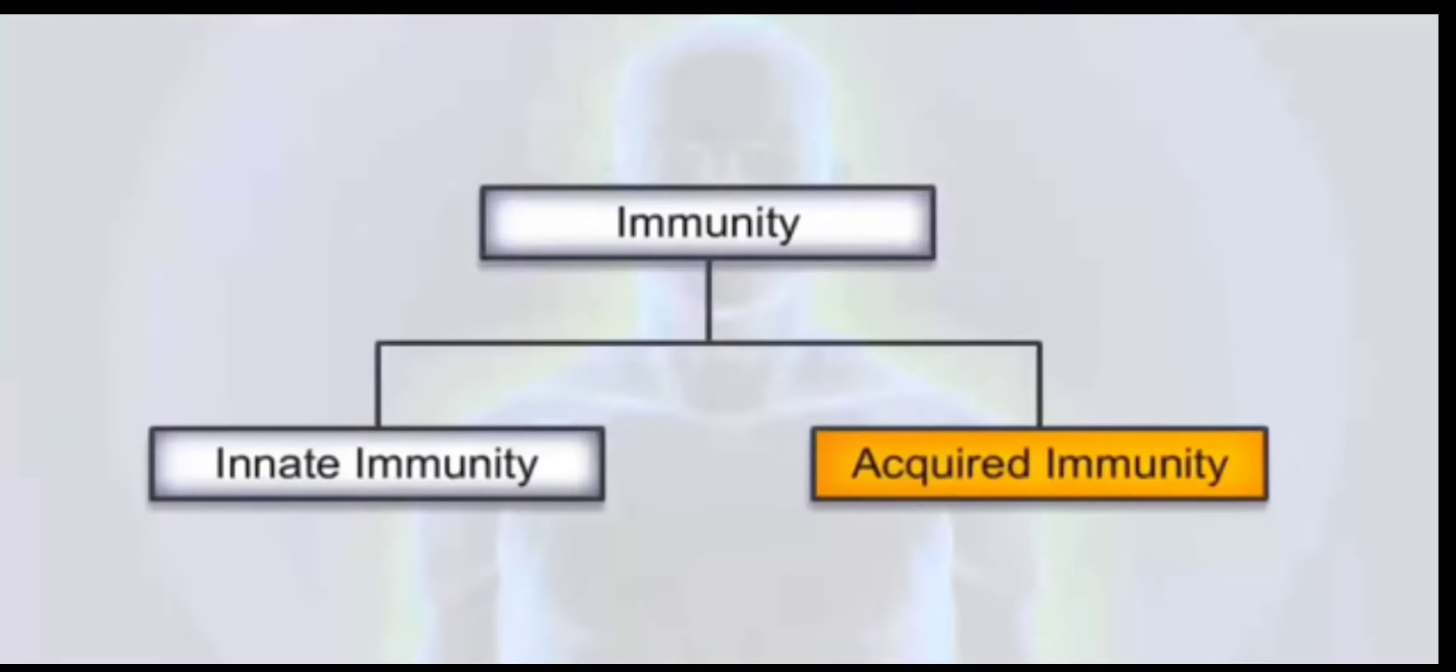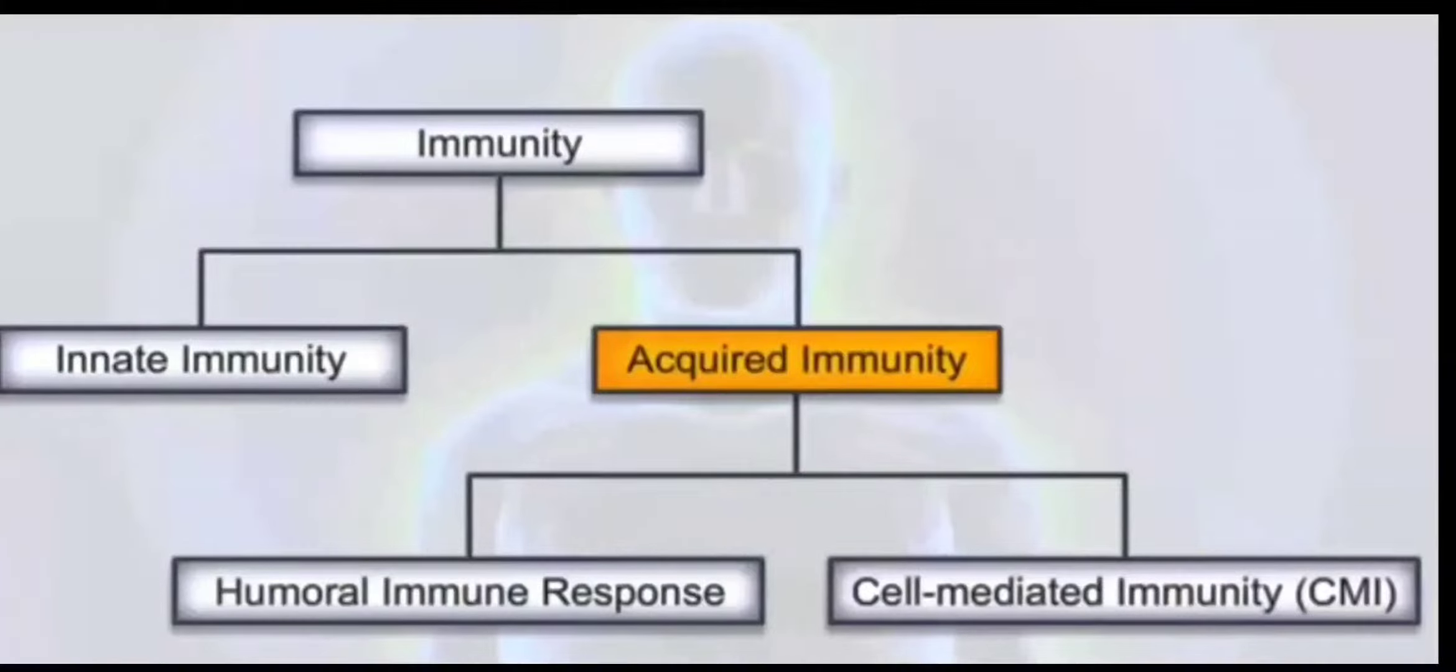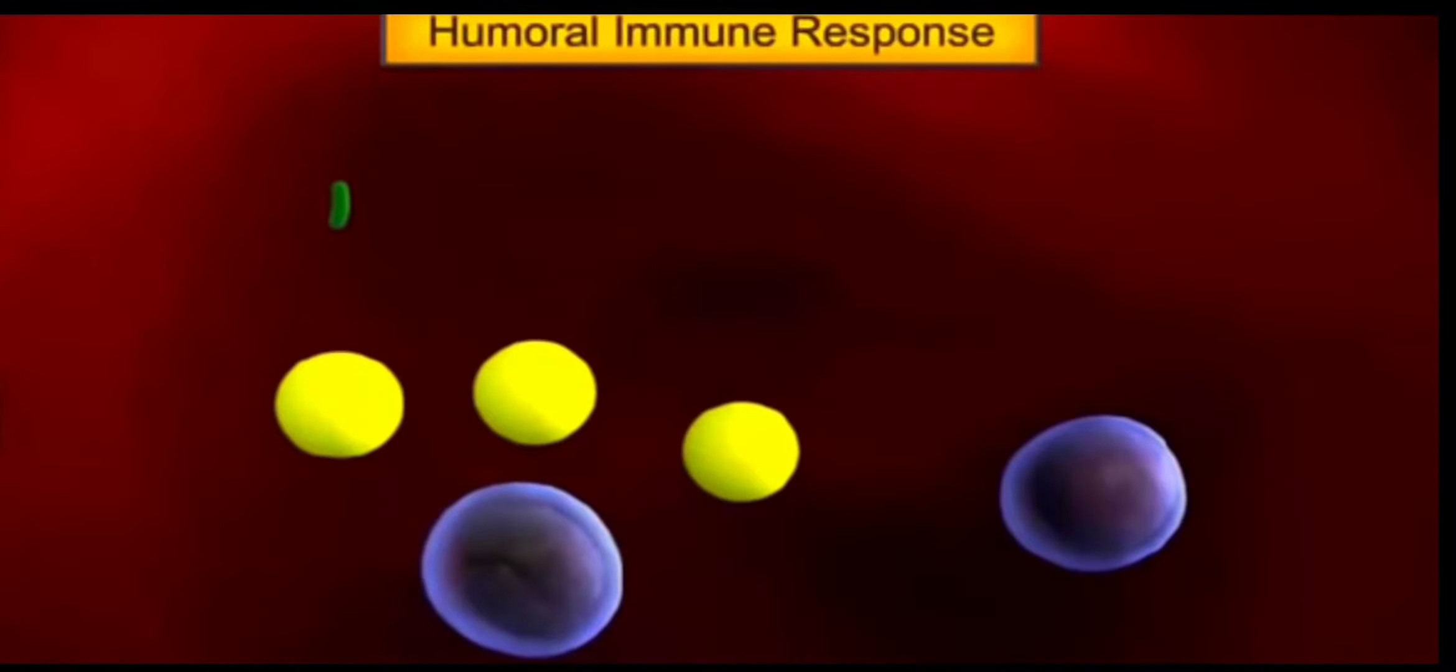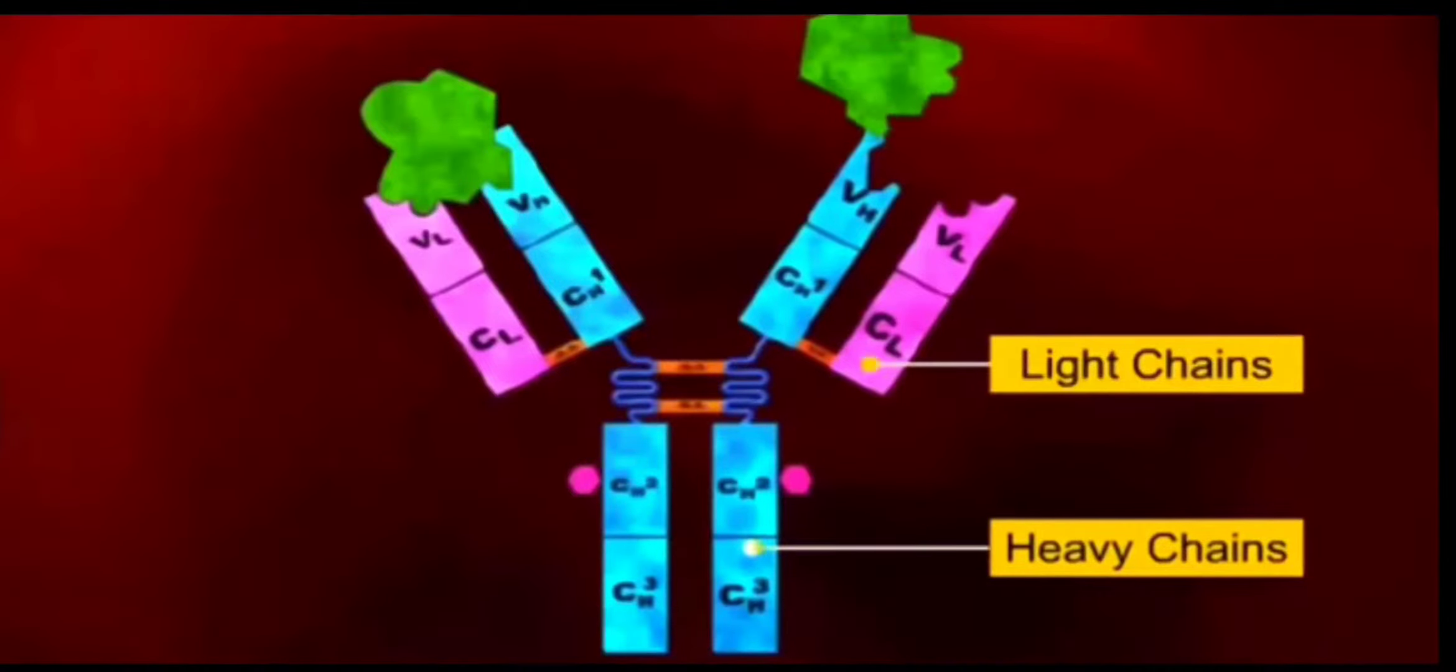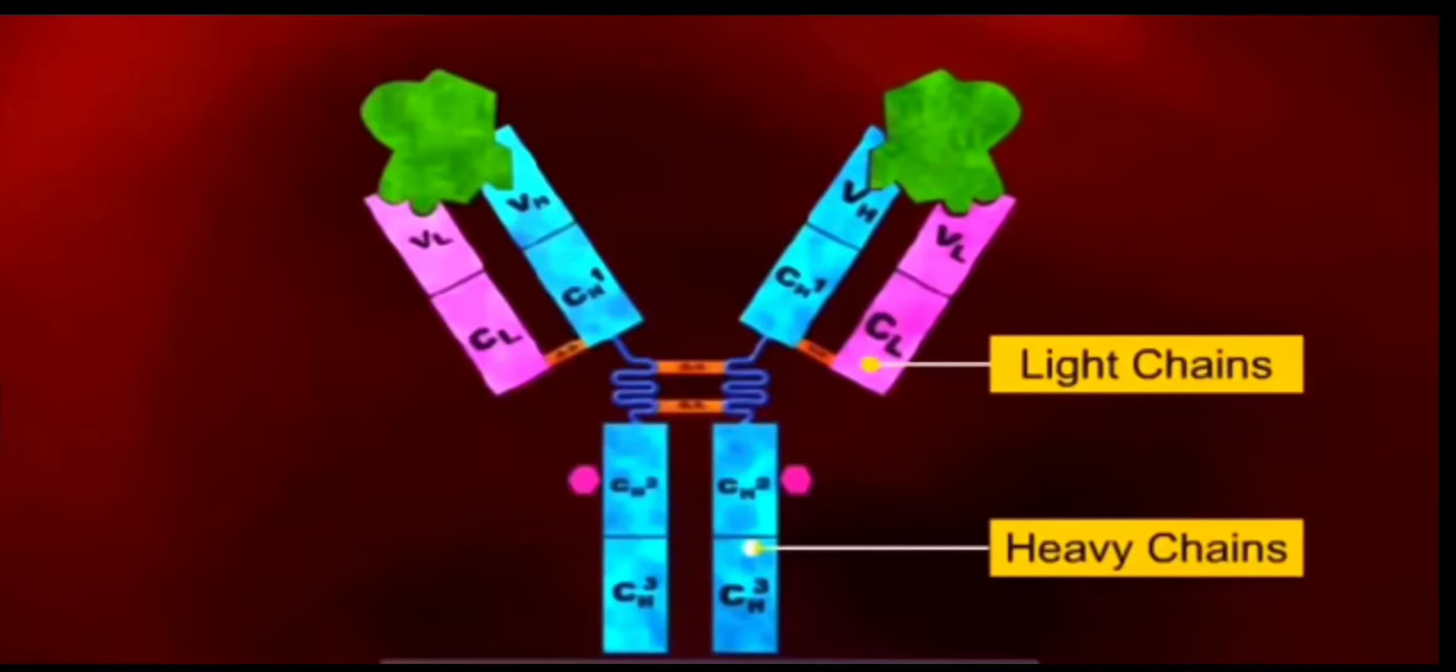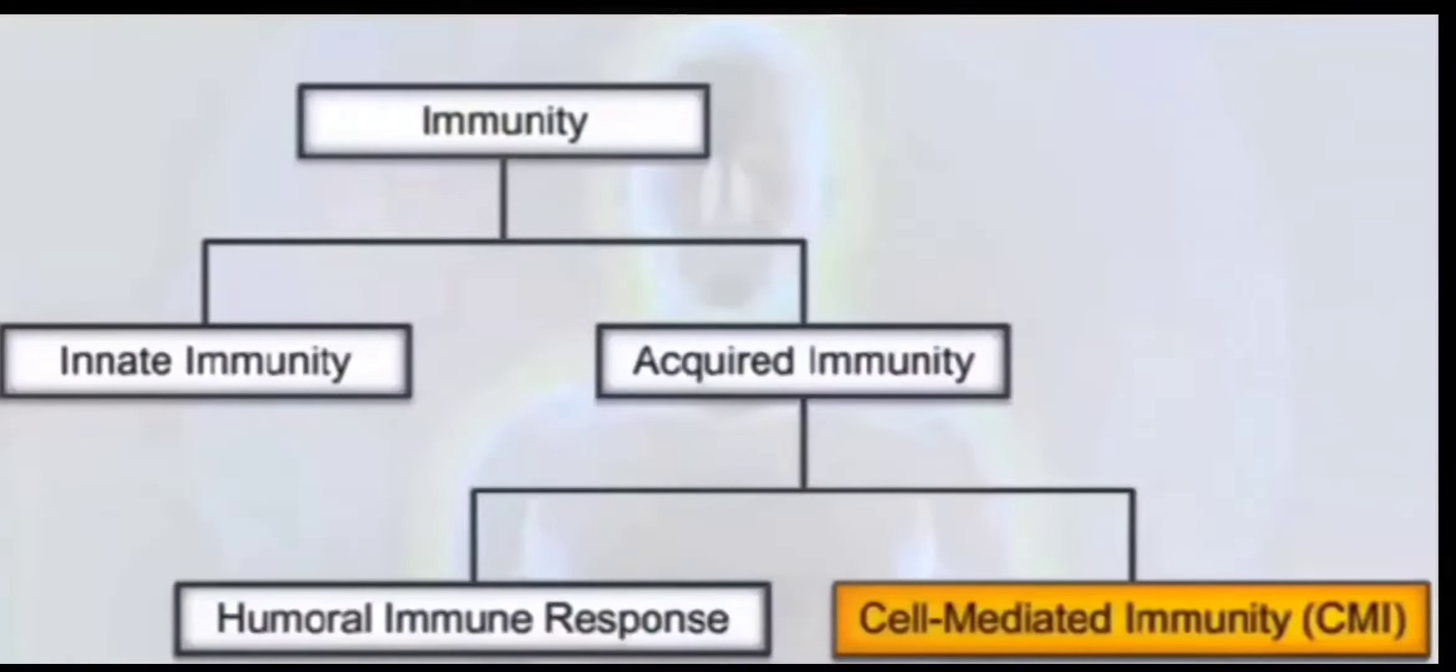This acquired immunity is again of two types: one is humoral immune response or HMI (humoral mediated immune response), or cell mediated immune response. Let us first study humoral mediated immune response. Humoral means fluid, so it is present in the blood. The blood has got these antibodies. When they find the antigen of a specific type, they capture it and neutralize it.